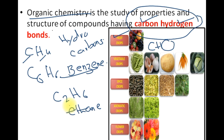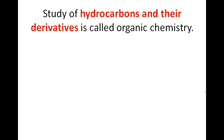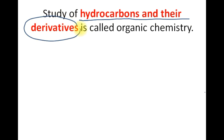Now, is it necessary that an organic compound must contain carbon and hydrogen? No, it is not necessary. We have another definition of organic chemistry that is much more suitable compared to the first one: the study of hydrocarbons and their derivatives. This means that from organic compounds, the new compounds we get are called derivatives of hydrocarbons.